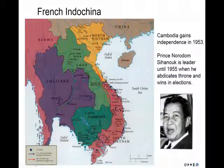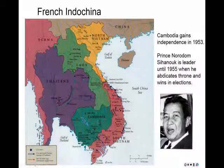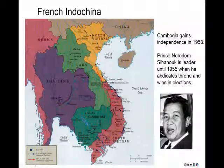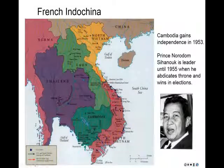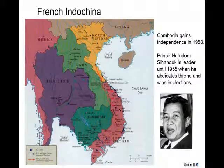In 1953, Cambodia gains its independence from France, and they are ruled by a hereditary ruler, Prince Norodom Sihanouk. He is a leader until 1955, when he abdicates the throne, saying they're going to have elections — and he wins the election in 1955.